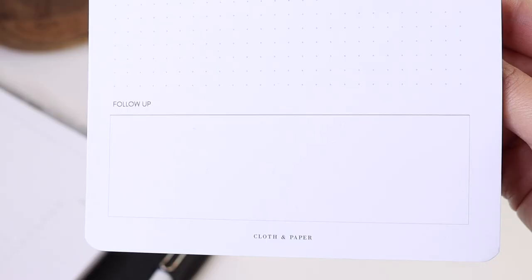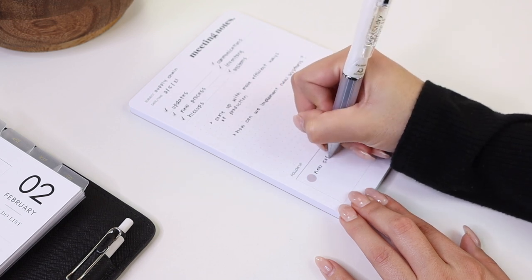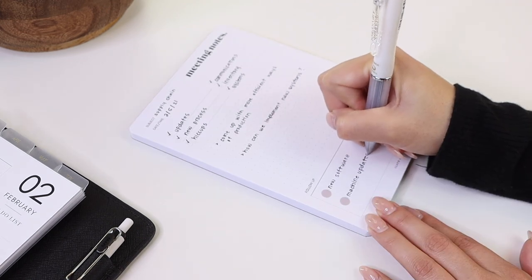And then at the very bottom, we have a follow-up section. This section is great for anything that can't be ironed out or completed in that meeting. You can go ahead and write down unanswered questions or anything that you might want to bring up in the next meeting.